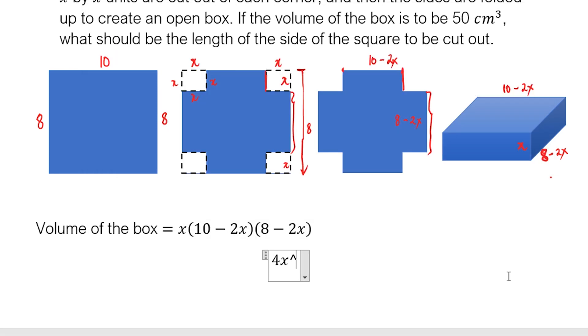That's equivalent to 4x³ minus 36x² plus 80x. That is 4x³ minus 36x² plus 80x.